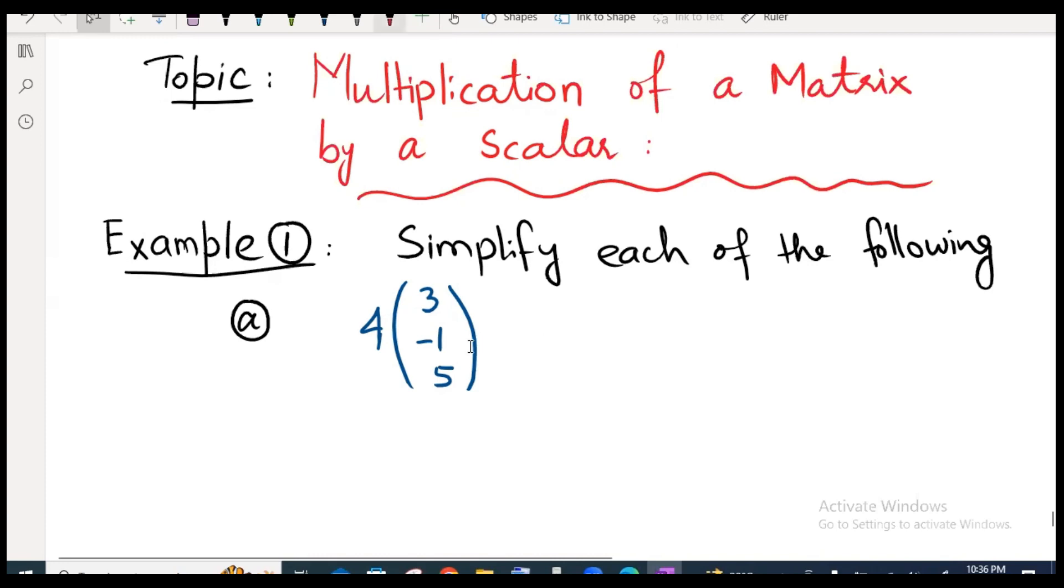If you are going to simplify or multiply by multiplication of a matrix by a scalar, what will happen? We will multiply 4 times 3, minus 1, and 5. 4 times 3 is 12, minus 1, 4 times minus 4 and 4 times 5 is 20.